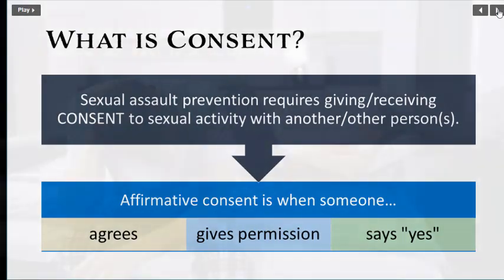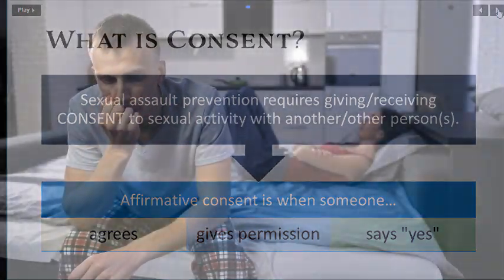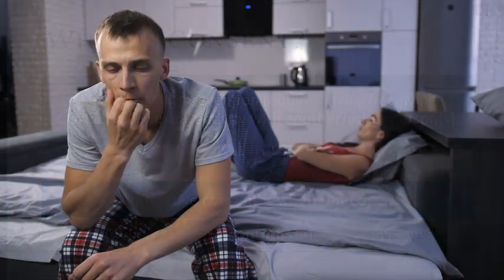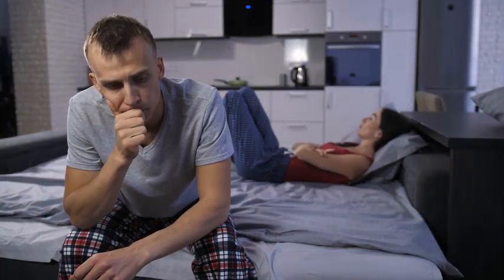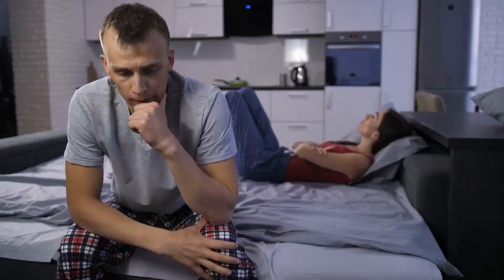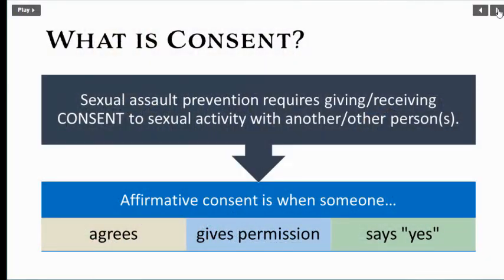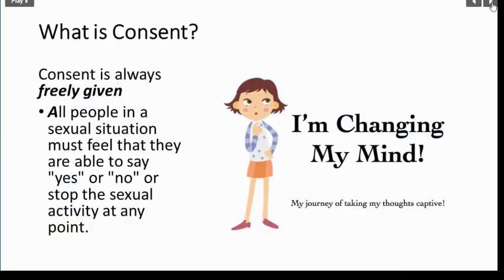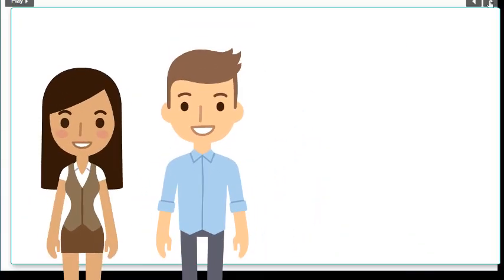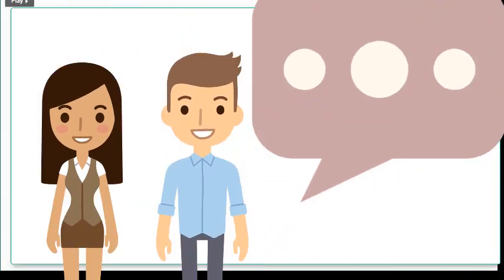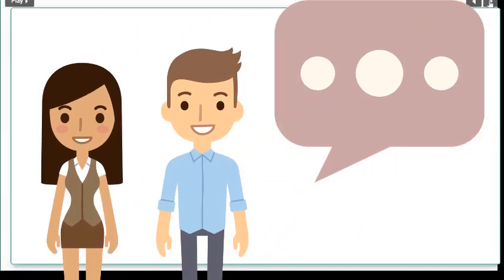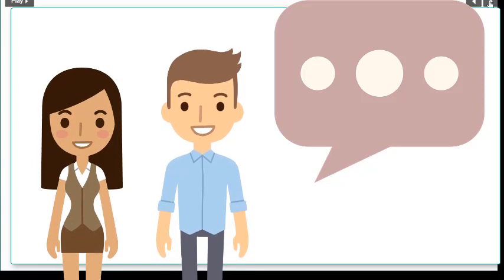What is consent? Sexual assault prevention requires giving and receiving consent to a sexual activity. Affirmative consent is when someone agrees, gives permission, or says yes. Consent is always freely given — all people in a sexual situation must feel that they are able to say yes, no, or stop the sexual activity at any point. Consent is a clear and unambiguous agreement, expressed outwardly through mutually understandable words or actions.